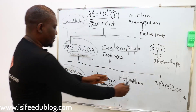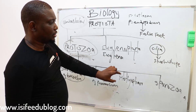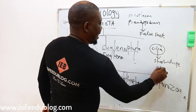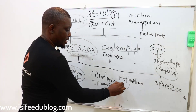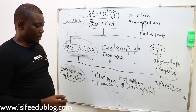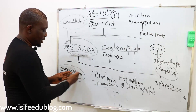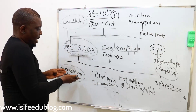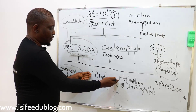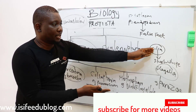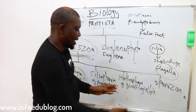Mastigophora is a class of protozoa that uses a structure called flagella for movement or locomotion. So the three classes of protozoa all show some structures of movement: Sarcodina uses pseudopodia (false feet), Ciliophora uses cilia (short whip) for movement, and Mastigophora uses flagella (long whip).